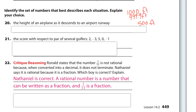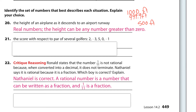It could be a negative number, and we could have decimals, fractions, and such — so I believe that would be real numbers. The height can be any number greater than zero. You could even have something as odd as the square root of 22 feet. So it could be anything greater than zero.